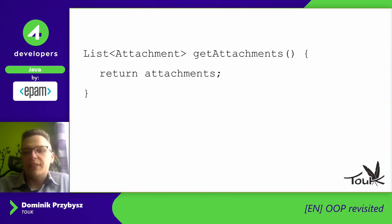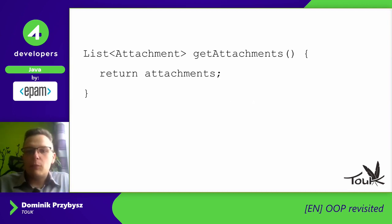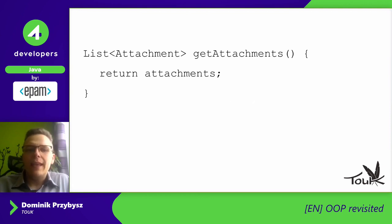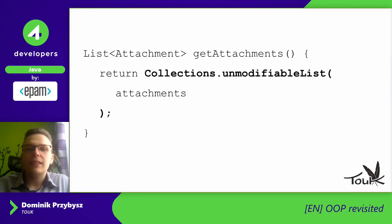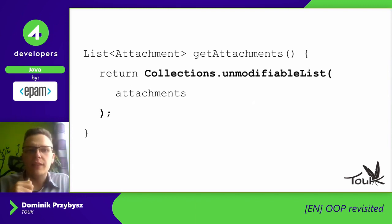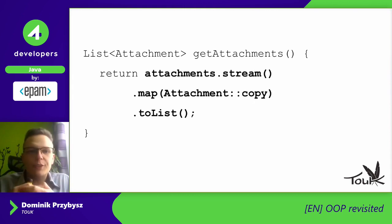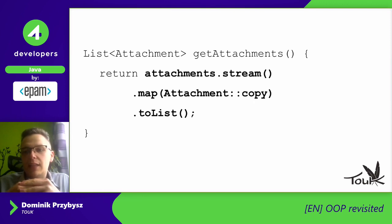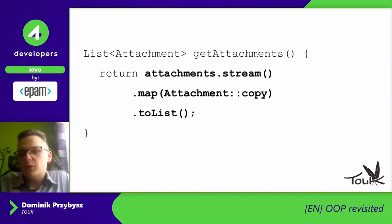On the other hand, you have getters, and sometimes they are really useful. For example, you can get the name of a task and return an immutable wrapper instead of a raw string. The bigger problem is when we have a container like a list and try to return attachments — someone could change that list, remove items, add something new, or change the order. We should always return an immutable collection wrapper, and even then, items in that list could be mutable.